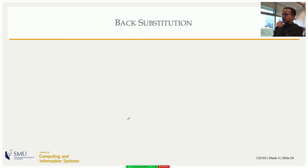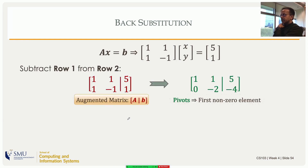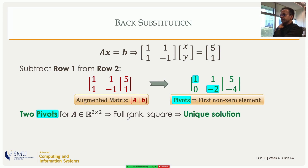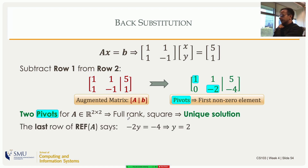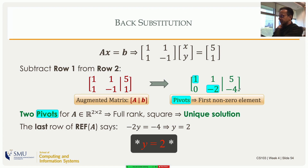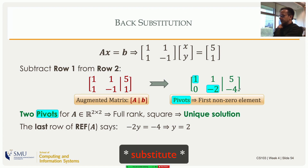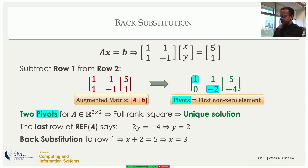Here is an example. Take the augmented matrix; subtracting the first row from the second gives the REF in one operation. We get two pivots and rank two — full rank, so a unique solution. The last row reads −2y = −4, so y = 2. Back substituting into row one: x + y = 5 means x + 2 = 5, giving x = 3.